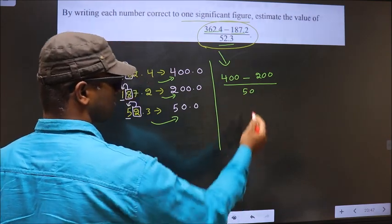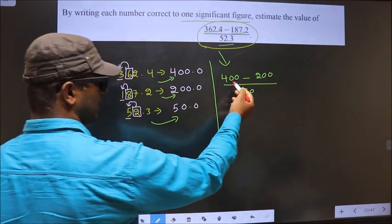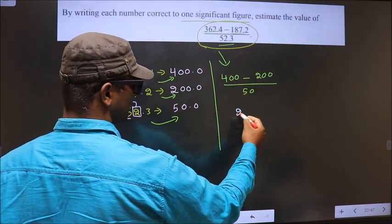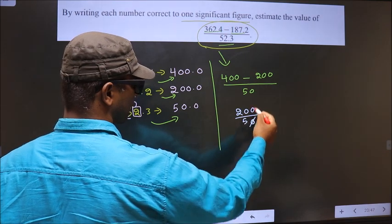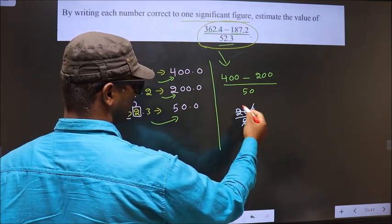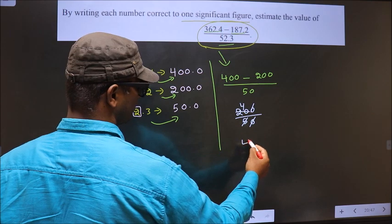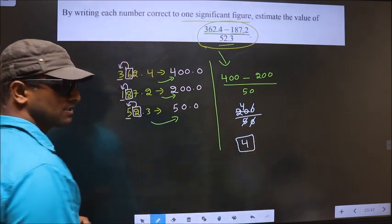So now, we should calculate this, that is 400 minus 200 is 200, divided by 50. So now, zeros cancel out, 5 ones, 5 fours, 20. So we got 4, this is our answer.